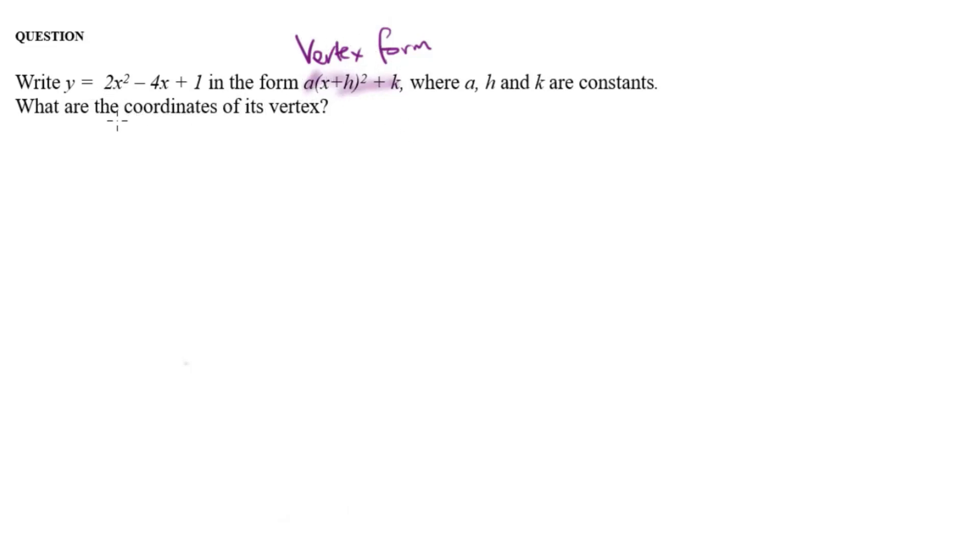So we know that once you write it in vertex form, we can get the coordinates. So let's go. So y is equal to 2x squared minus 4x plus 1.